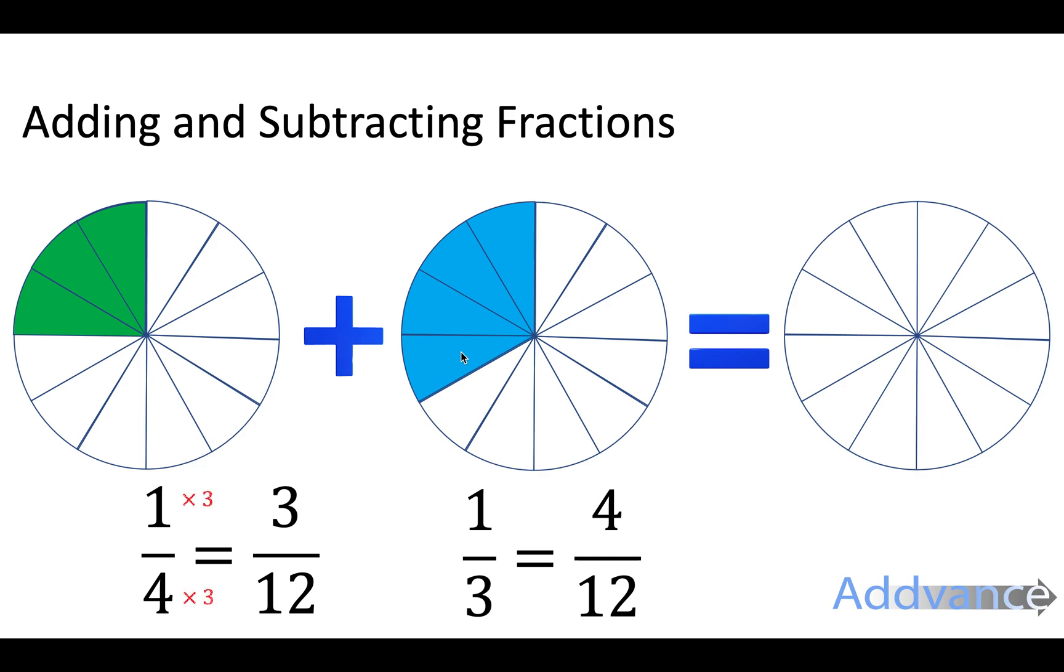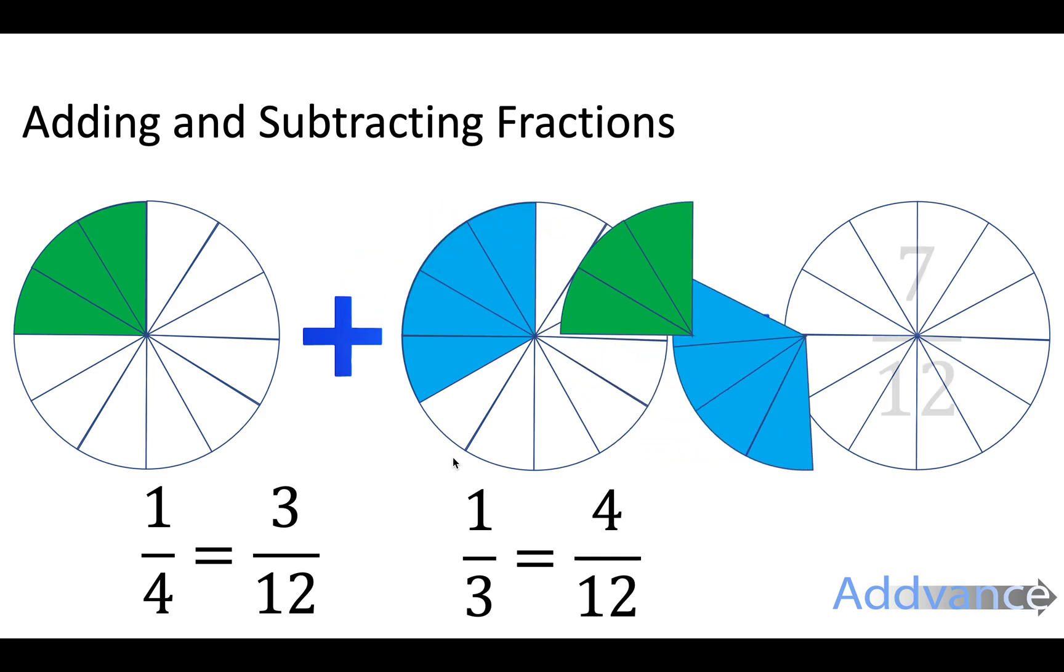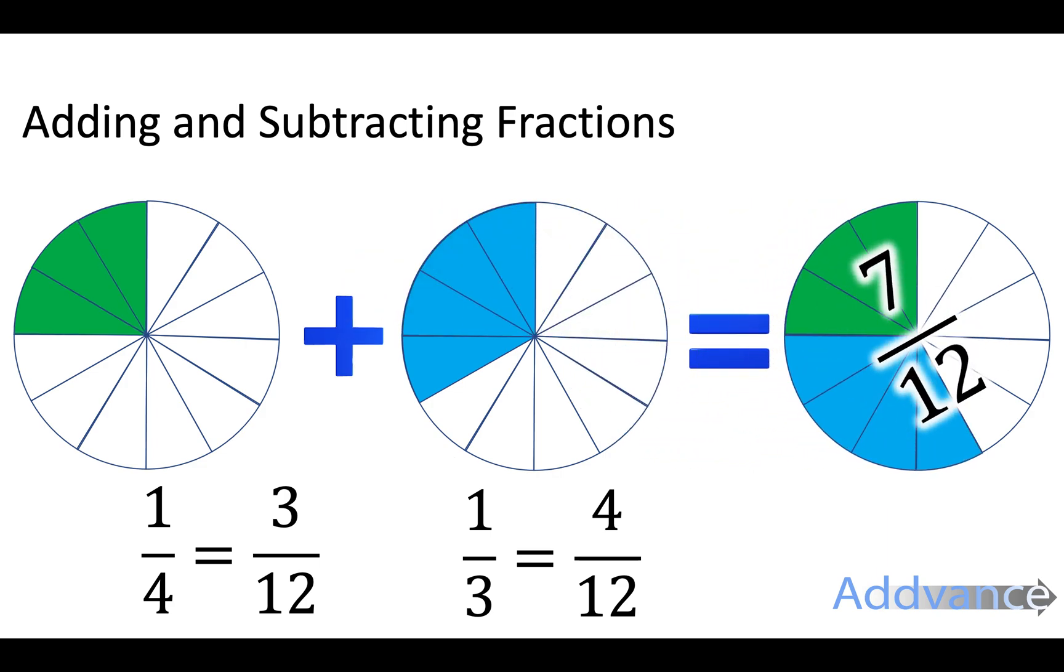To convert them without the picture you multiply the top and the bottom of the fraction by the same thing. To get twelfths here I do 4 times 3 and so I do the same on the top and multiply it by 3. Similarly over here to get twelfths on the bottom I times it by 4. And so 1 quarter is 3 twelfths, 1 third is 4 twelfths. I can now add them really easily and they add together to make 7 twelfths.